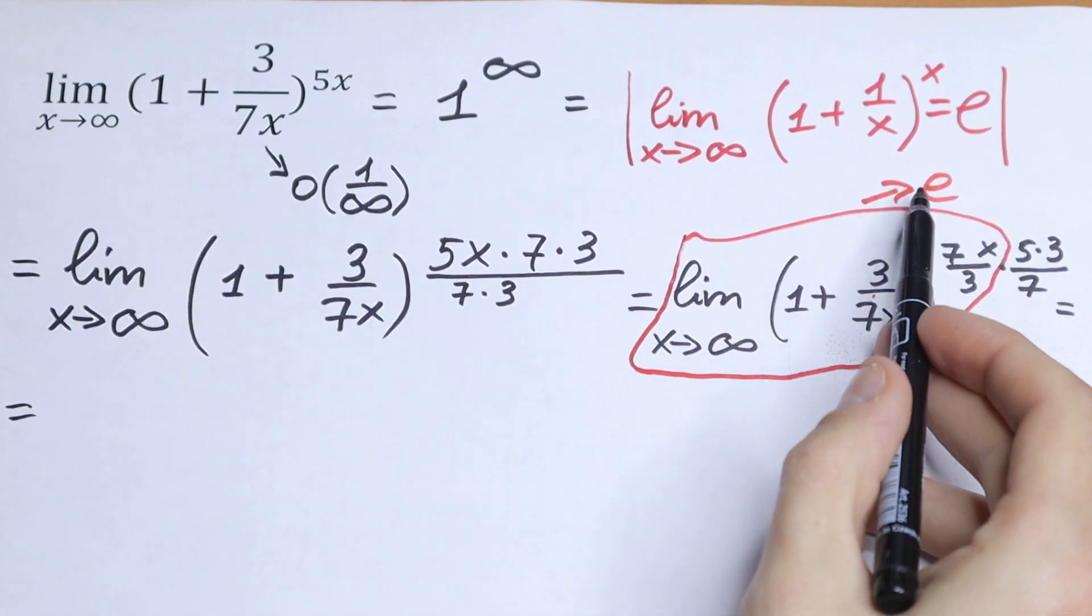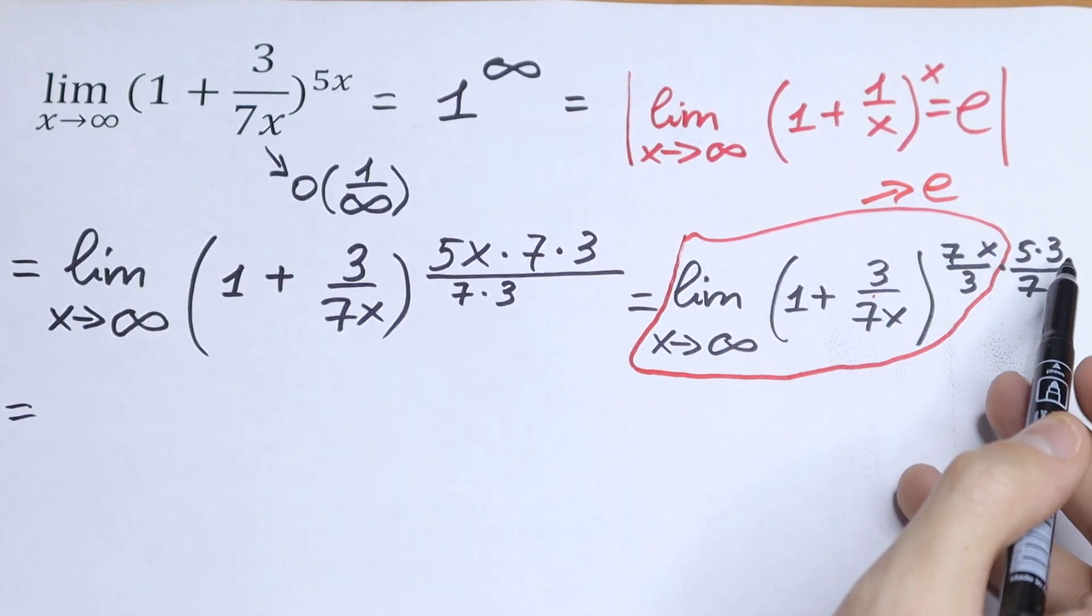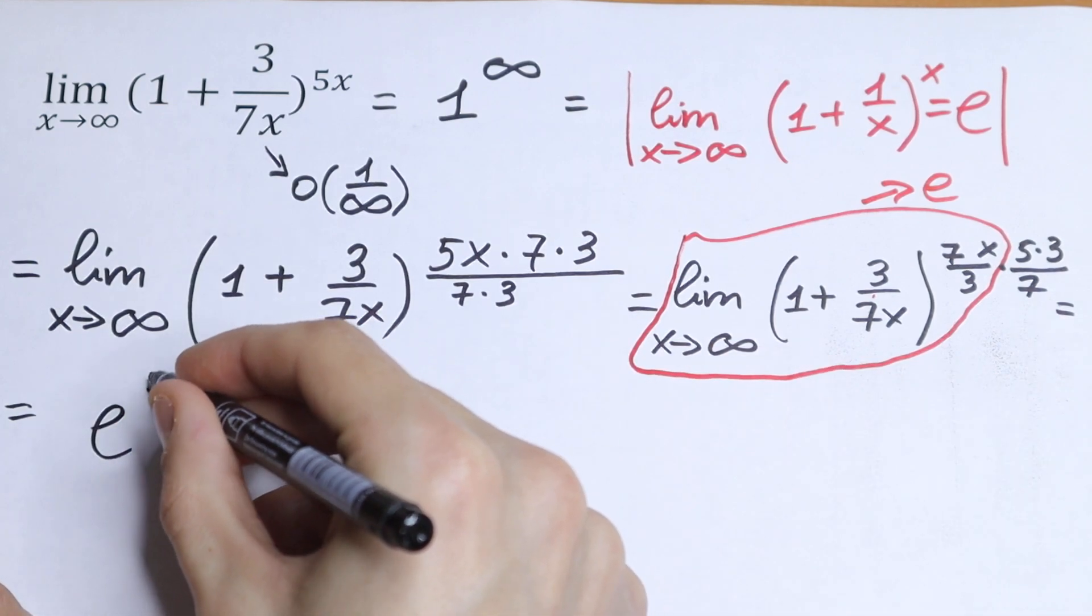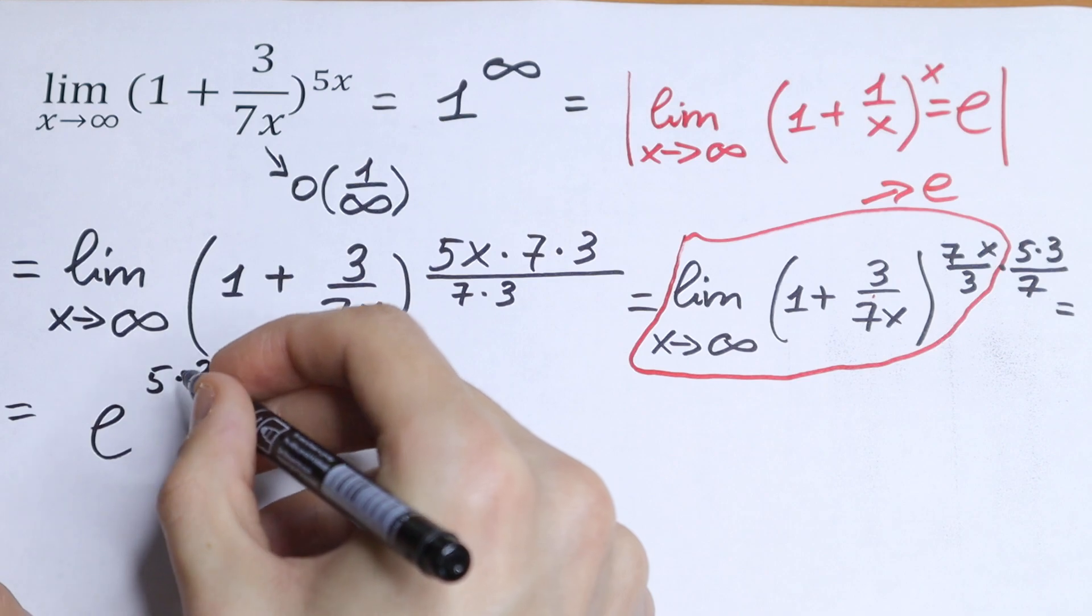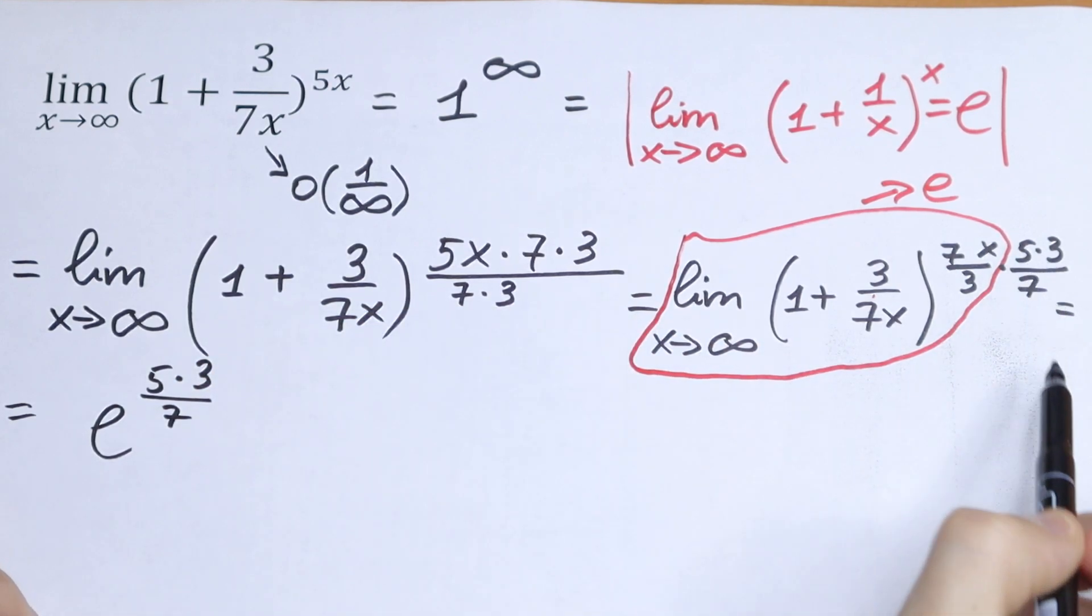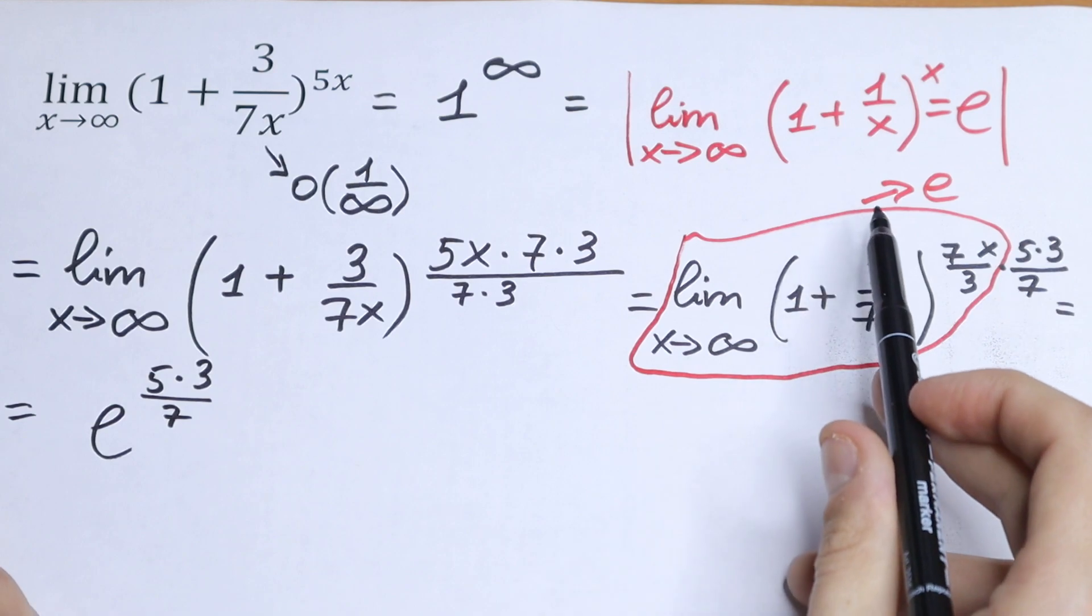And right here we have a constant, so we can simplify this. We will have e to the power 5 times 3 over 7. So this approaches to e.